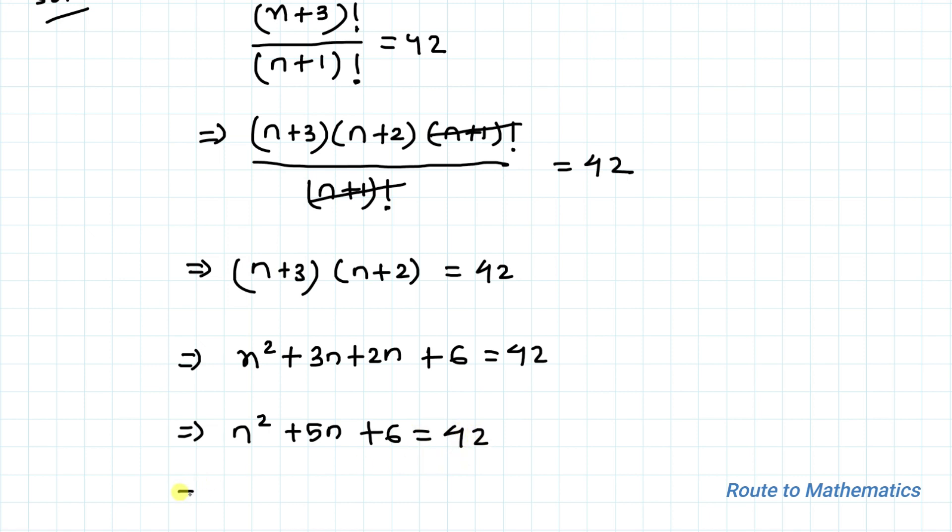Now by taking 42 to the left hand side, we have n² + 5n - 36 equals 0.